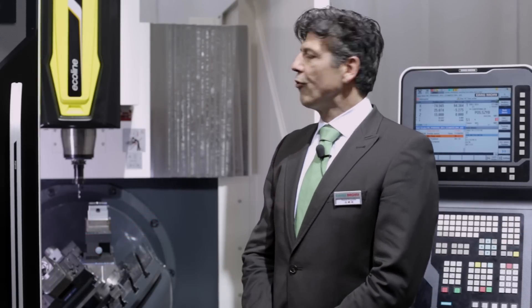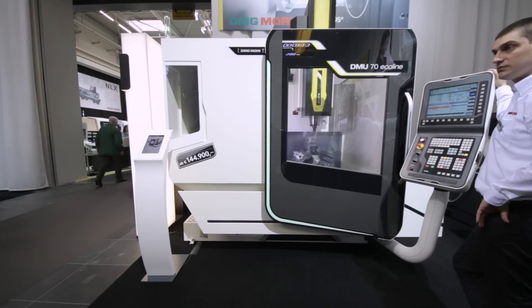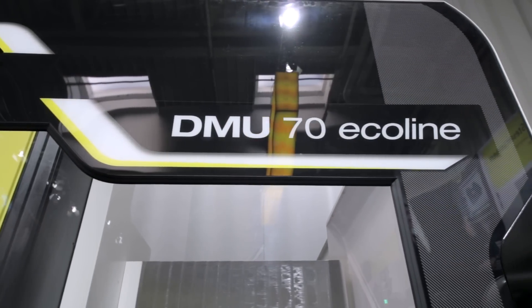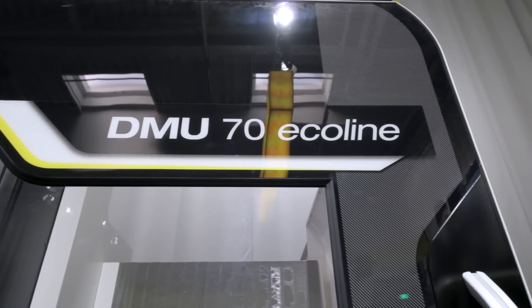On the OpenHouse Fronten, we introduce a new world premiere, our DMU70 ECO. This is the bigger brother from the DMU50 ECO, one of our most successful five-axis entry models.